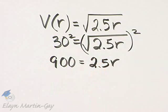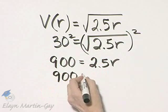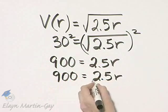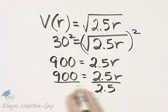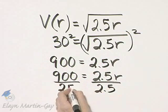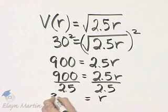Now, how do we solve this equation for r? We'll take the left side and the right side of this equation, and we'll divide both by the coefficient of r, which is 2.5. So r is 900 divided by 2.5, and that is 360.